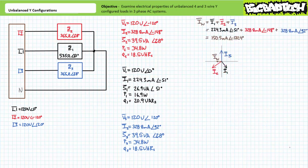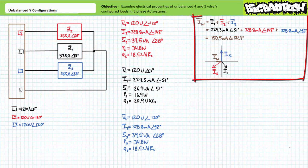Let's now examine current in the neutral line for an unbalanced four-wire Y-configuration. Our previous Kirchhoff's current law analysis suggested I-N equals I1 plus I2 plus I3. Substituting our given values yields I-N to be approximately 150.5 milliamps at an angle of negative 172.4 degrees. The phasor diagram of all the currents shows that I-N appears to be the offset or imbalance for the three branch currents.